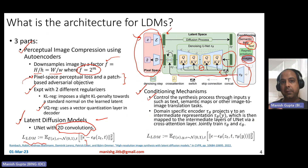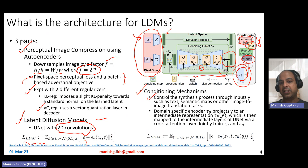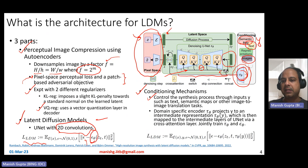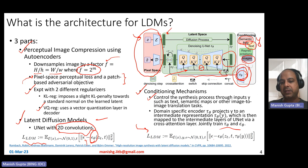The conditioning mechanisms control the synthesis process through inputs Y, such as text, semantic maps, or other image-to-image translation tasks. There is a domain-specific encoder which projects Y onto an intermediate representation, which is then fed to the U-Net model via cross-attention layers. There are two models to be trained jointly: epsilon theta and tau theta, using a combined loss function. Since it's conditioned, the loss function is still trying to estimate the same noise to be subtracted, but the estimate depends not just on Z and T, but also on the conditioning information tau theta of Y.